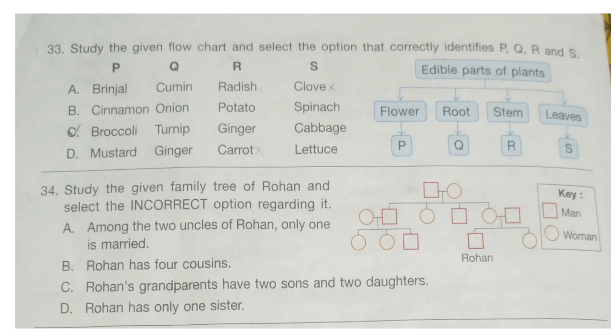Question 33. Study the given flowchart and select the options that correctly identifies P, Q, R and S.